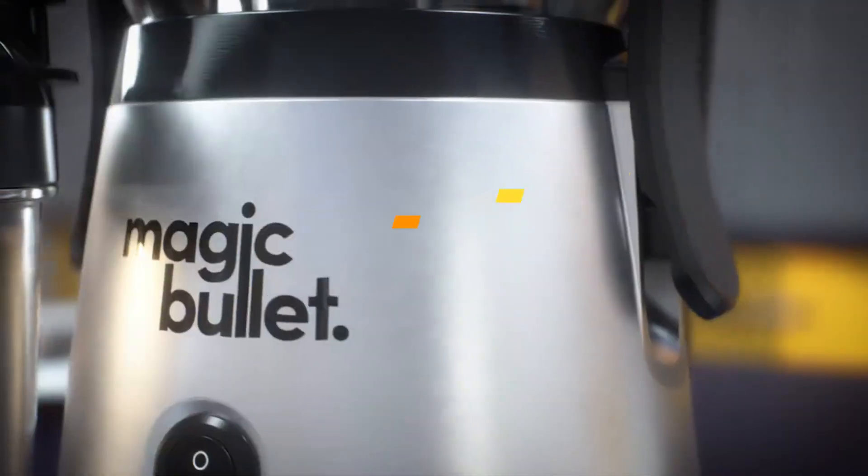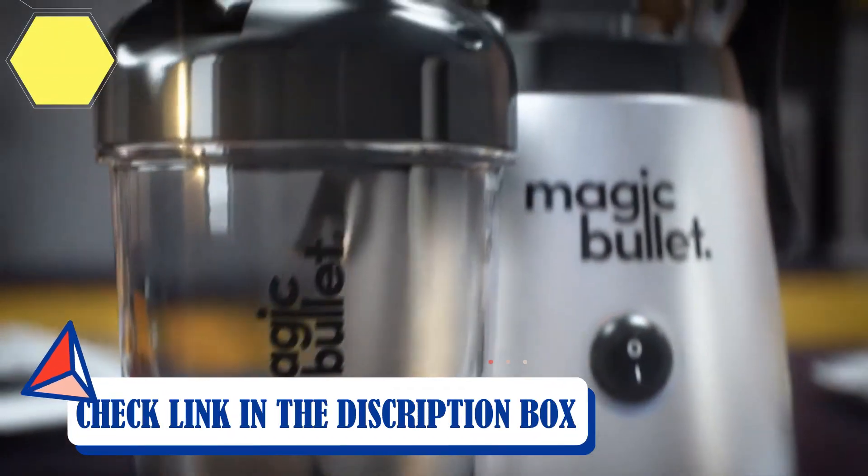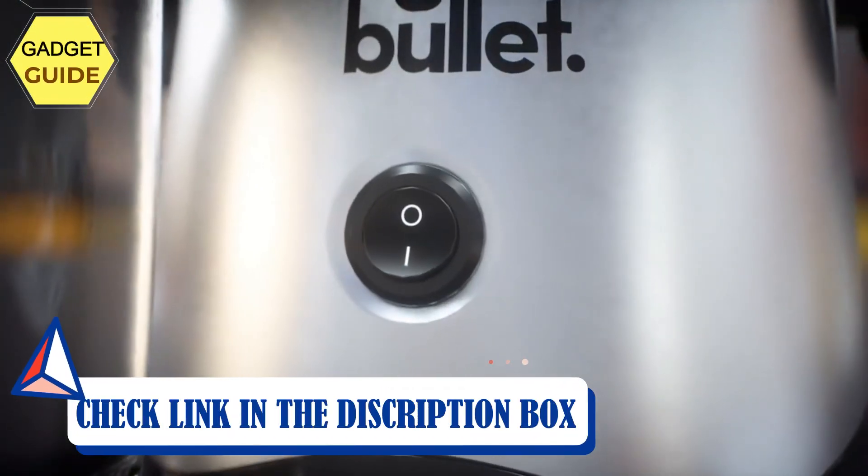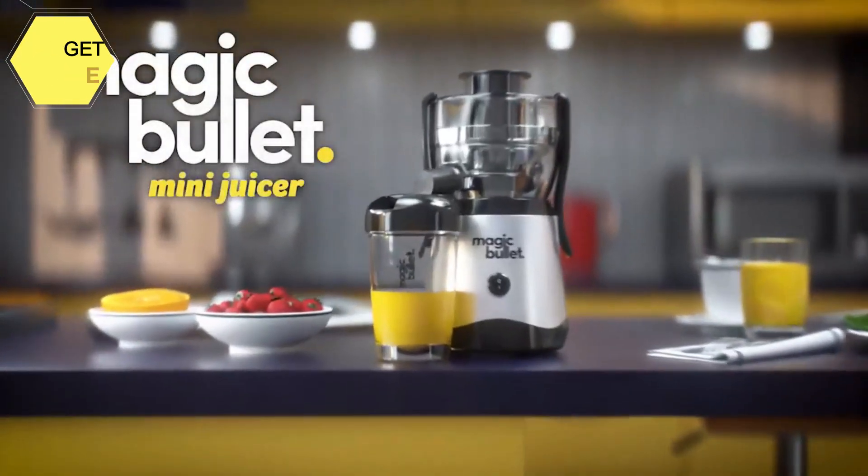Number 3: Magic Bullet Juicer. A powerful 400-watt motor extracts all the juicy nutrition from your favorite fruits and veggies. A roomy 2-inch feed chute fits larger chunks of your favorite ingredients. Translation: less chopping, more juicing.